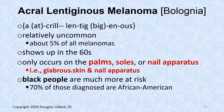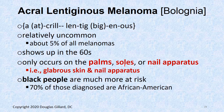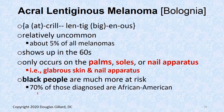Acral lentiginous melanoma makes up about 5 percent of melanomas, shows up in the 60s, and has a specific location — it only appears on glabrous skin: the palms, the soles, or the nail apparatus. Black people have a very high risk for these — 70 percent of acral lentiginous melanomas occur in Black people.